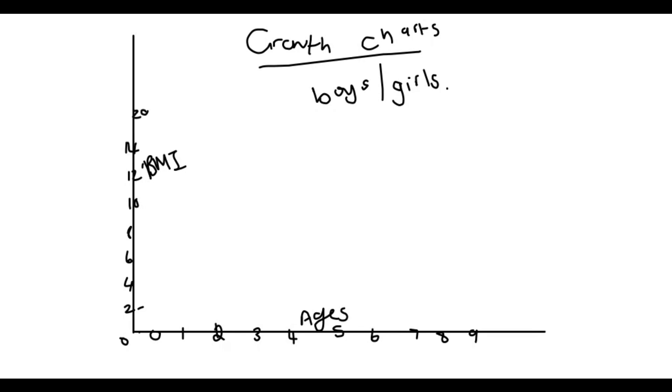Now, we move on to growth charts. Growth charts are specifically for, it would either be boys or girls, or they would specify whether it's both on one graph. And here at the bottom, we have your ages. So, maybe it's 0, 1, 2, 3, 4, 5, etc. And then here on the side, we would have your BMI. So, also starting at 0, maybe, something like 2, 4, 6, 8, 10, etc.